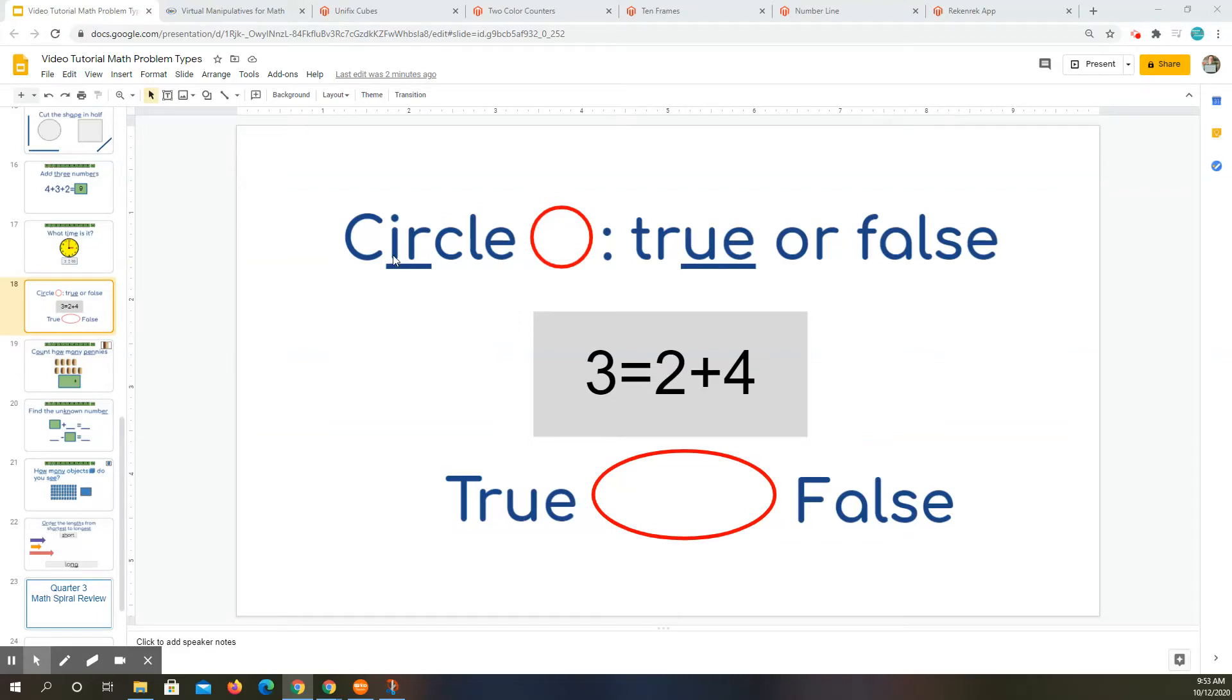First, let's read what we're going to do. This says circle true or false. True means that the problem is correct when we read it. False means that it doesn't make any sense. So let's look at the first one.